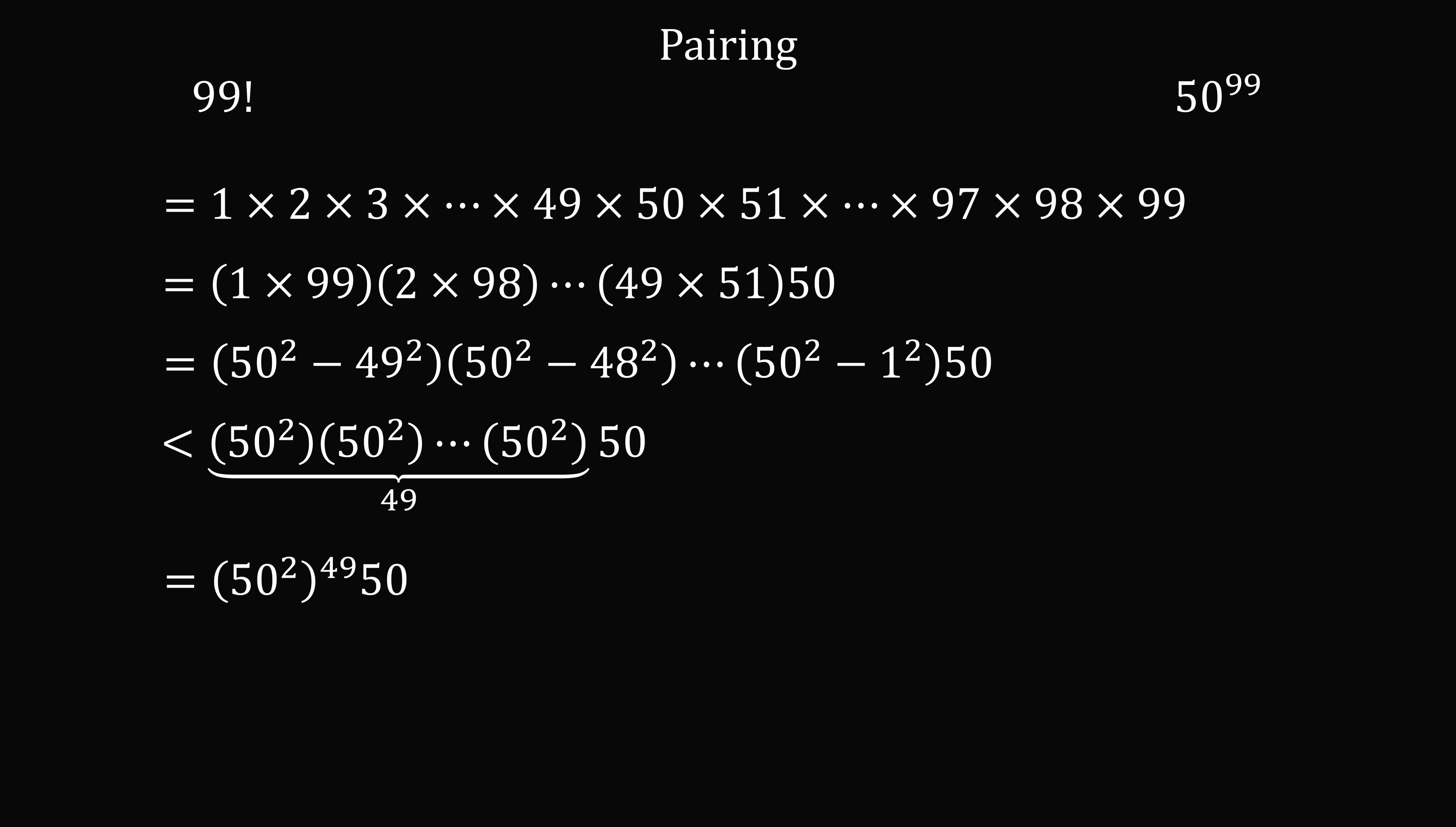So we have 50 squared to the power of 49 multiplied by 50. That will be equal to 50 to the power of 98 multiplied by 50, which is equal to 50 to the power of 99.